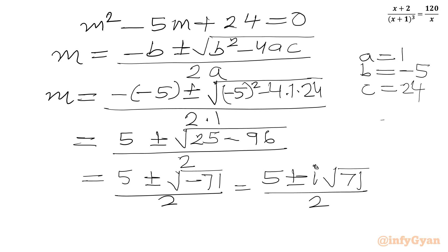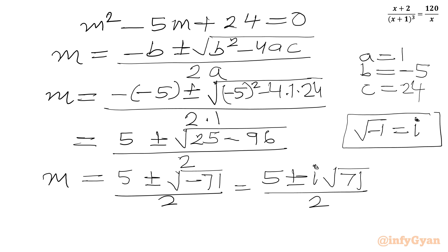As we know, the square root of −1 is the complex number i. Now this equals m, which was our substitution 1/(x + 1), so we set 1/(x + 1) = (5 ± i√71) / 2.